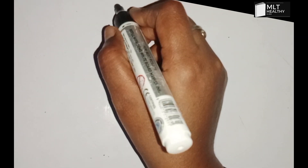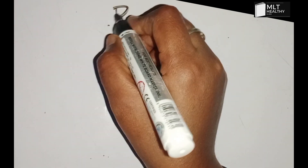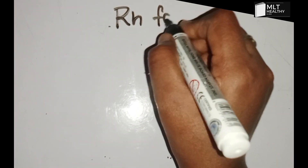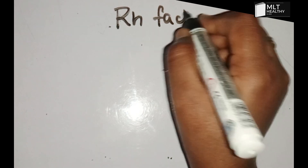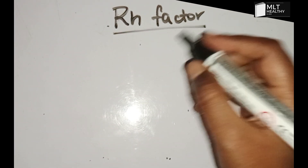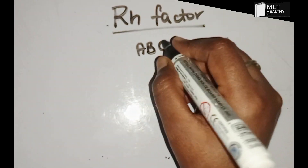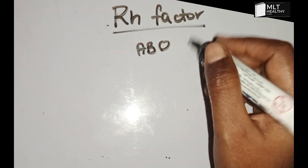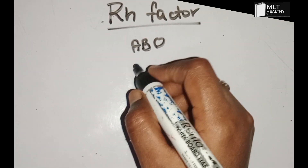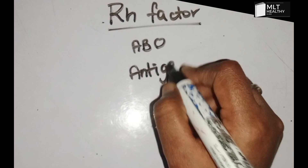Let's look at the Rh factor. The inheritance of the Rh antigen is a simple topic. This is the main topic for blood groups. I have already done the ABO blood group system video — the link is in the description below. The Rh factor is a type of antigen.